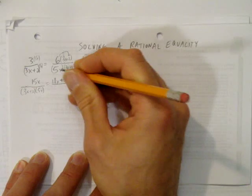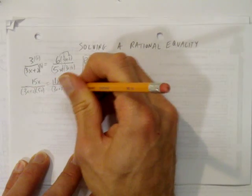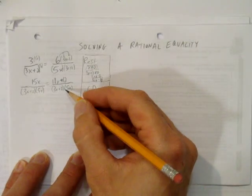So we have 18x plus 12, all over the same two brackets. I'm just going to write them in the same order, it doesn't matter, as 3x plus 2, 5x. Just to be clear that this denominator is in fact a common denominator.